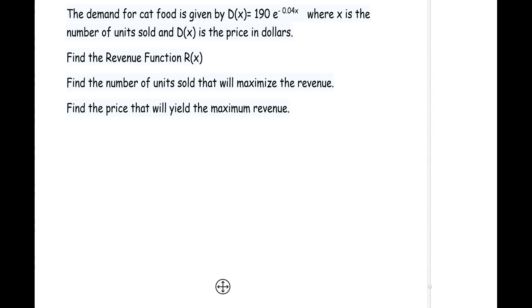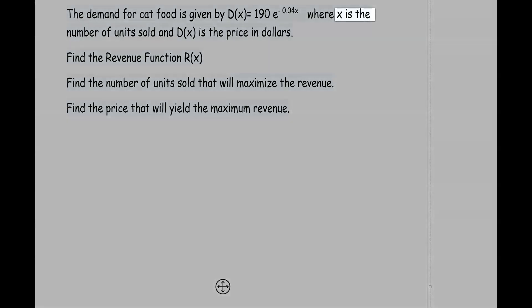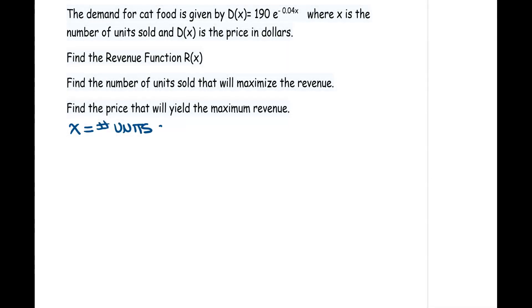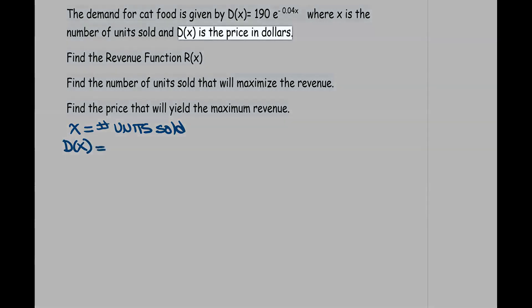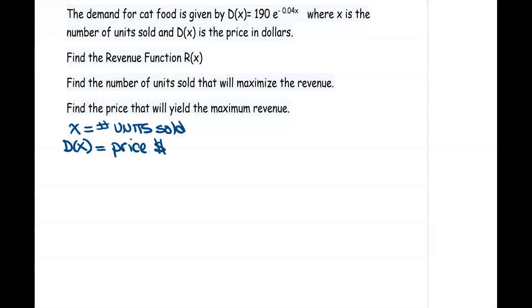If you'll read through this, I'm going to start by just quickly identifying the variables. We notice that x represents our number of units that are sold, and this is in cat food, while the function D(x) represents our price in dollars. So be sure you're clear on what our variables are.